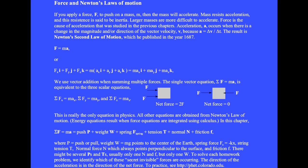The solution to every homework problem in this chapter is going to be the sum of the vector forces equals mass times the vector acceleration, which equals a push P plus a weight W plus a spring force plus string tension T plus surface normal force plus sliding frictional force. Next, we define each one of these terms and see how they result from the electric force among the atoms of a material.